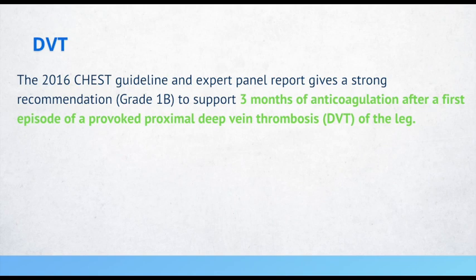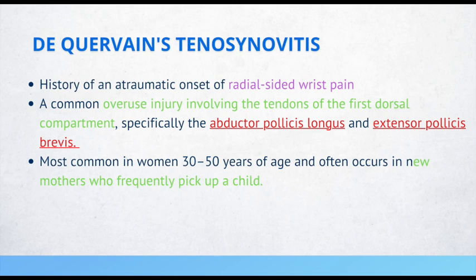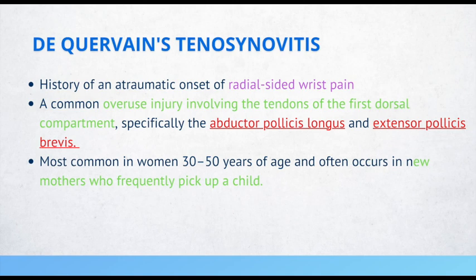De Quervain's tenosynovitis: patients with this condition have a history of atraumatic onset of radial-sided wrist pain. It is a common overuse injury involving the tendons of the first dorsal compartment — specifically the abductor pollicis longus and extensor pollicis brevis. It is most common in women 30 to 50 years of age and often occurs in new mothers who frequently pick up a child.